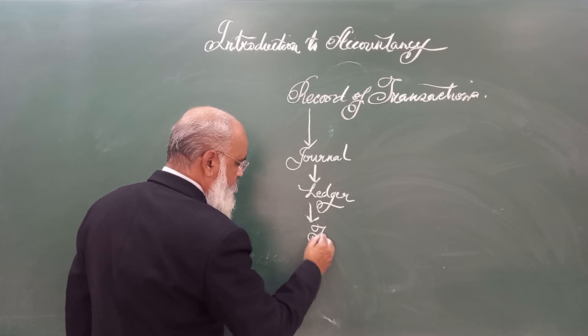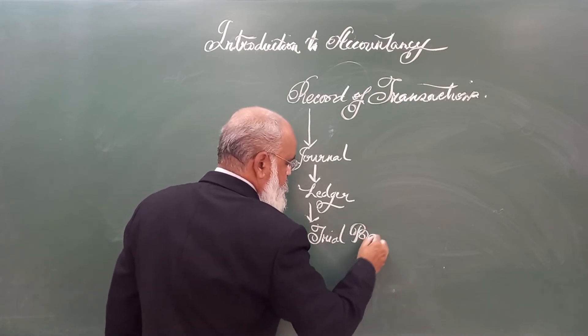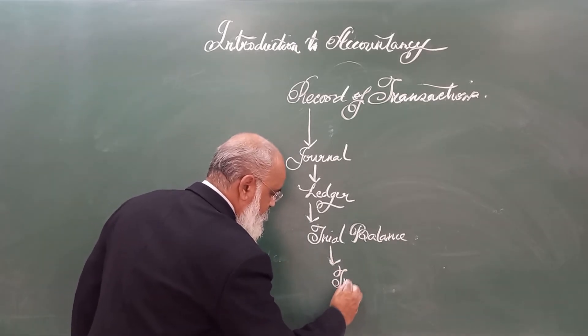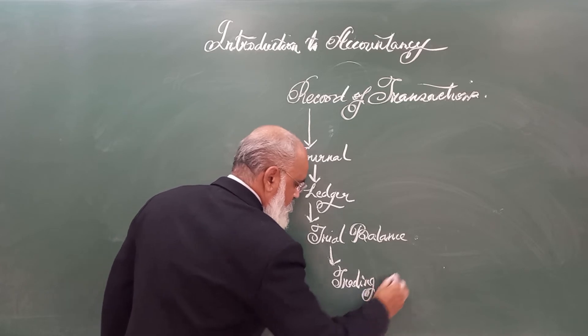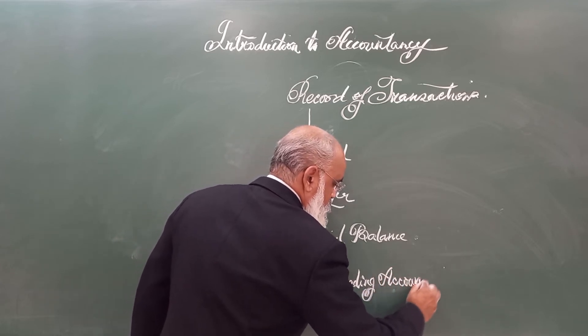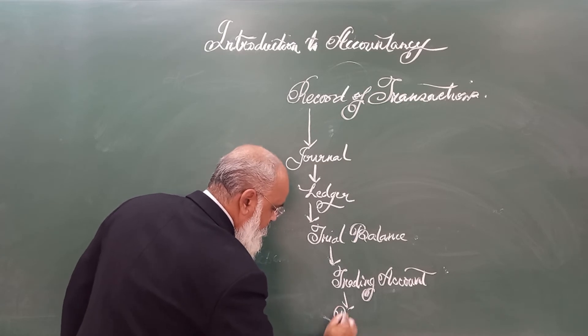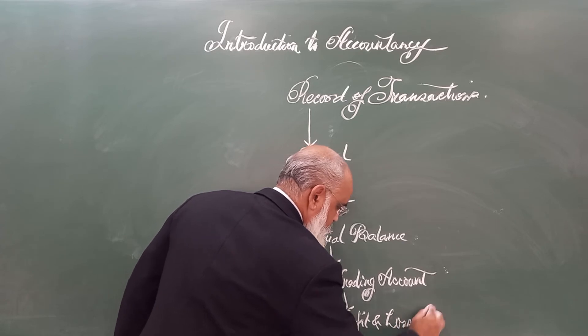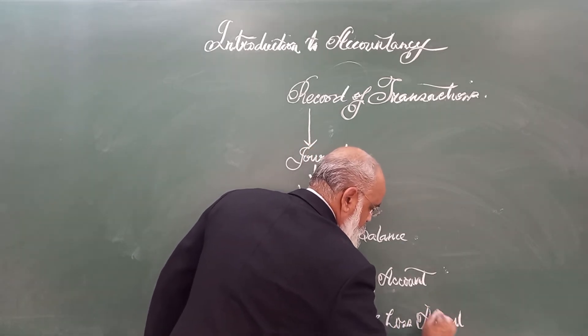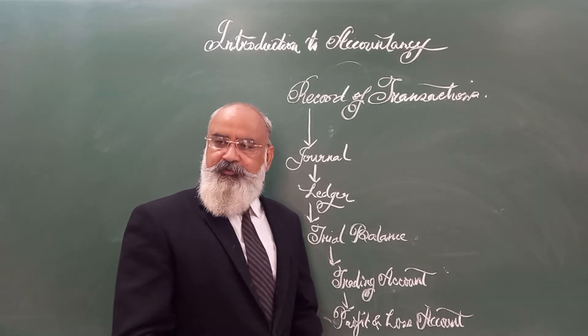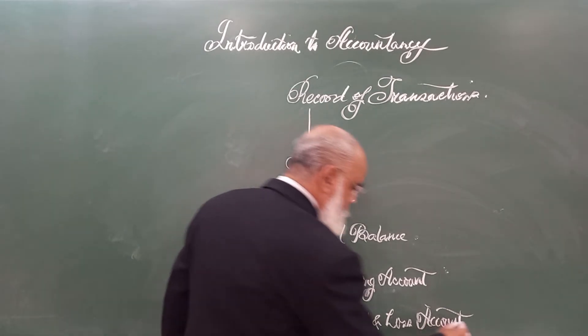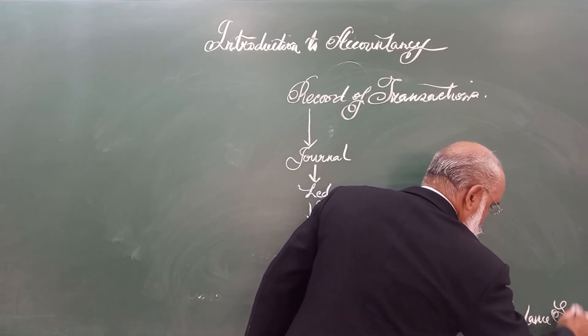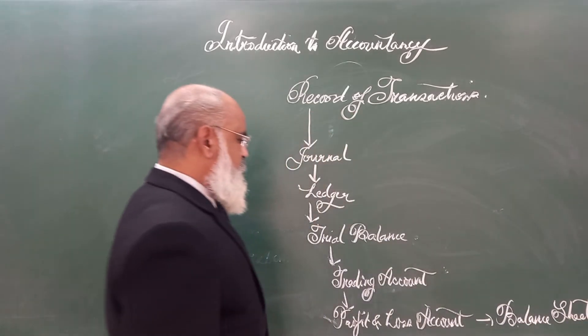After trial balance, it is trading account. After trading account, it is profit and loss account. And after preparing profit and loss account, the businessman needs to prepare a balance sheet. This process is known as accounting process or accounting cycle.